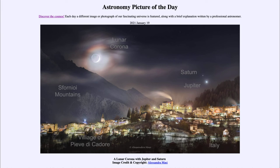As you continue to look at the image you may notice a couple of other star-like objects very close to Jupiter — those would be a couple of its Galilean satellites, the four large satellites of Jupiter, which would also be visible to the naked eye were it not for the brightness of Jupiter. The brightness of Jupiter is overwhelming and makes them essentially invisible, however we can see them in this image.